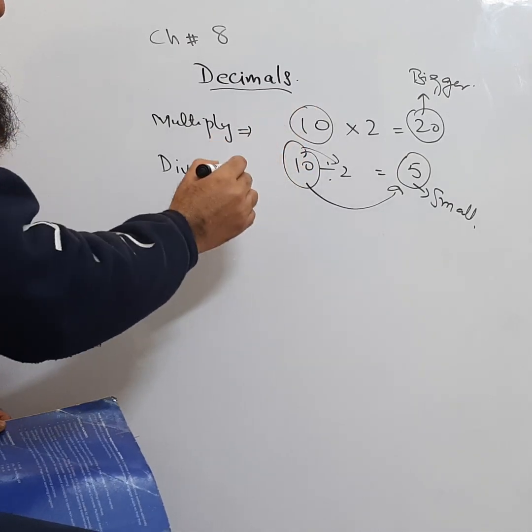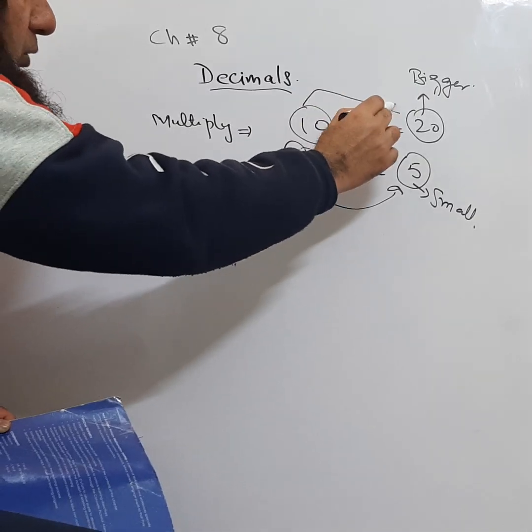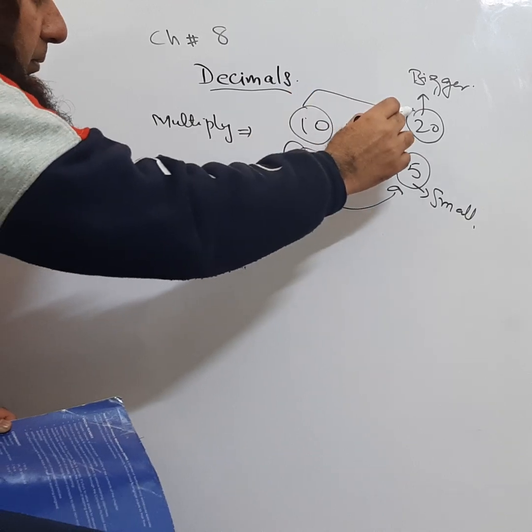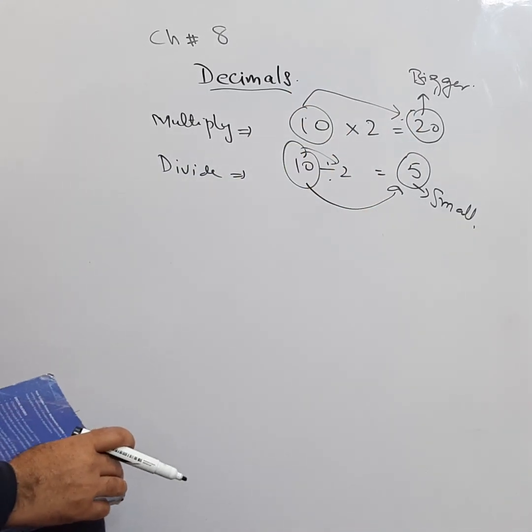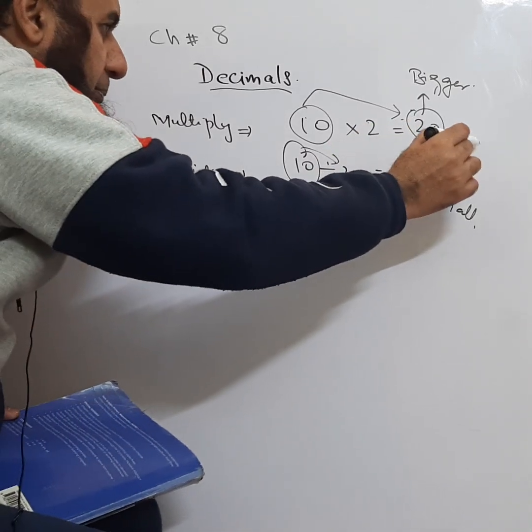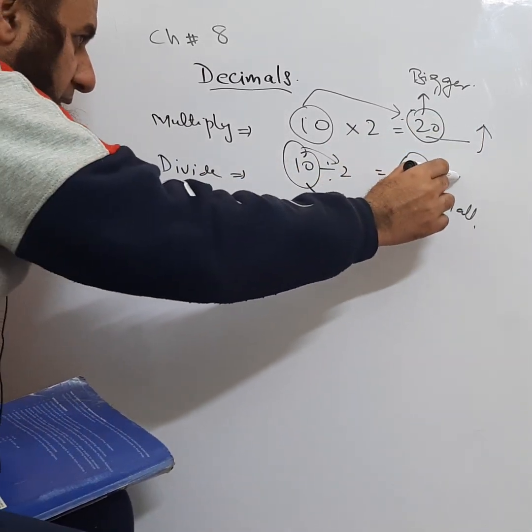It was originally like this. When we multiplied with 2, we got 20, so now it has become a bigger number. Always remember: when we multiply, our answer will be big, and when we divide, our answer is small.